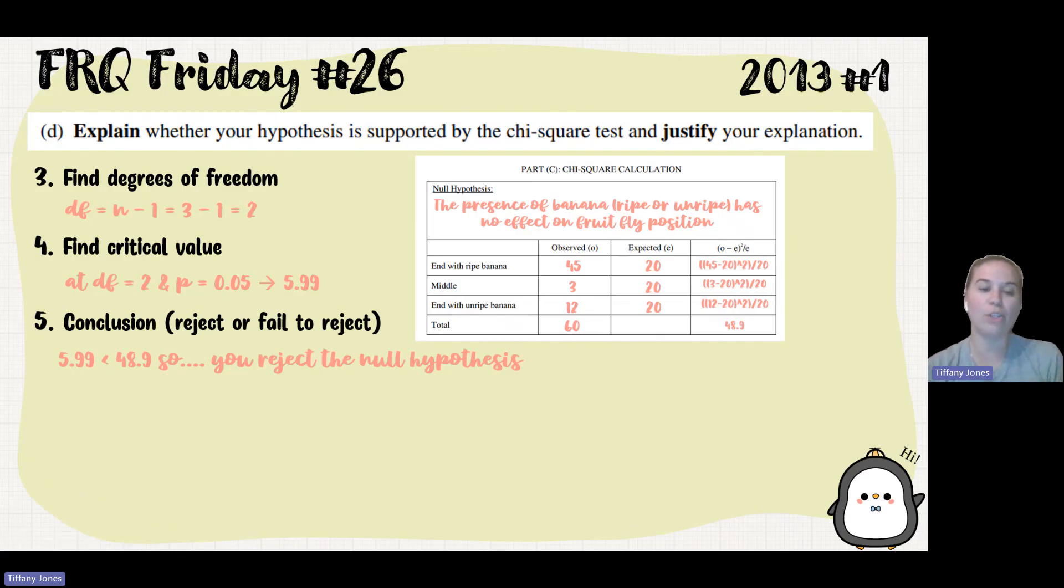And I can see that that's actually less. So my calculated value is greater than my table value, so that tells me that I'm going to reject my null hypothesis because of the fact that there is something else at play, and I do not find there to be equal concentration or equal numbers of my flies in each of the regions.